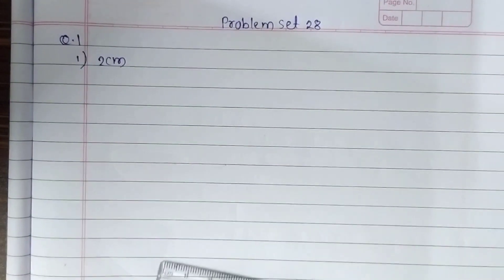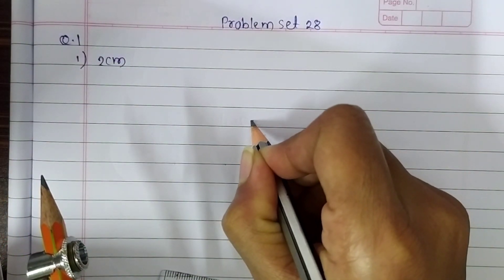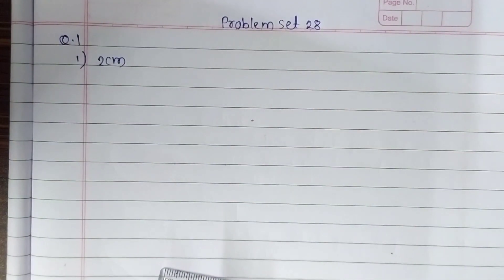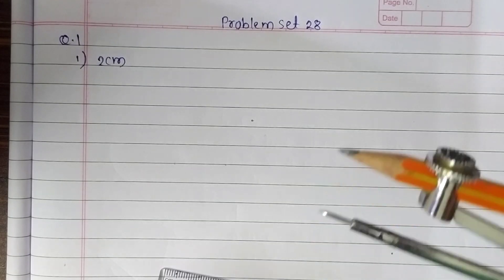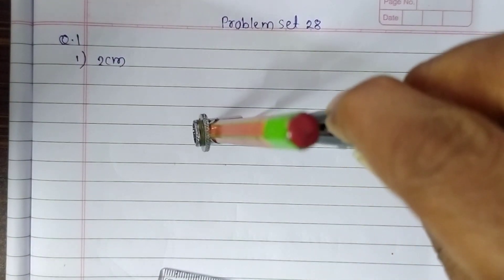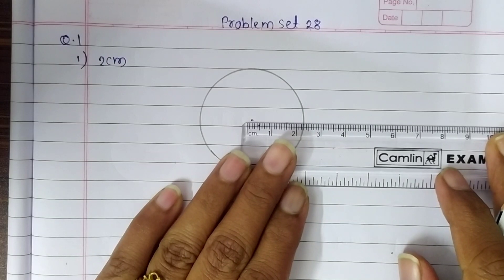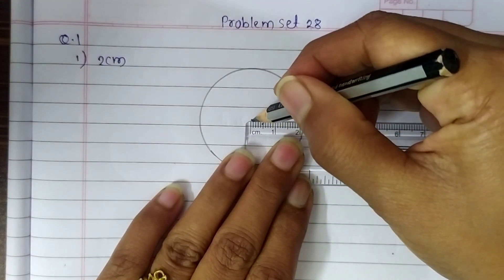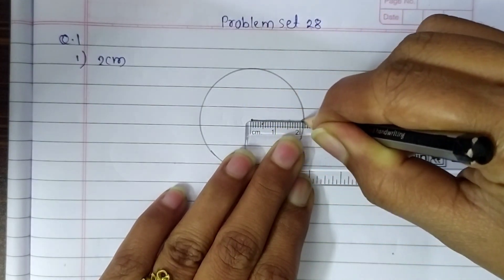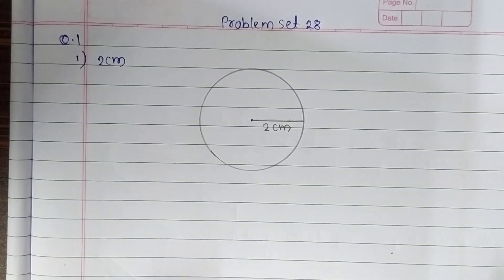Start from the first line. Now we have to take a point on a piece of paper — that is our center point. This is our center for the circle. Hold the metal tip steady on the chosen point like this, and turn the pencil point around it on the sheet of paper. Look, our circle is complete now. To show the radius, we draw a line from the center point like this, and write 2 centimeters. This is the solution for our first sub-question.